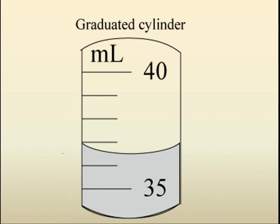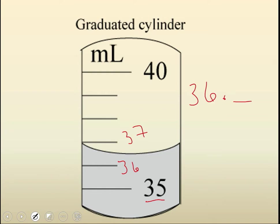Here's an example of a graduated cylinder, and the blue part at the bottom represents the water inside. If I were to read this, I am absolutely sure — because that's the 35 mark, this is 36, this is 37 — that this measurement of volume is somewhere between 36 and 37. So I'm going to call it 36-point-something. I would mentally separate those two spaces into 10 spots, and it looks like it's really close to halfway, so I would call it 36.5 milliliters.